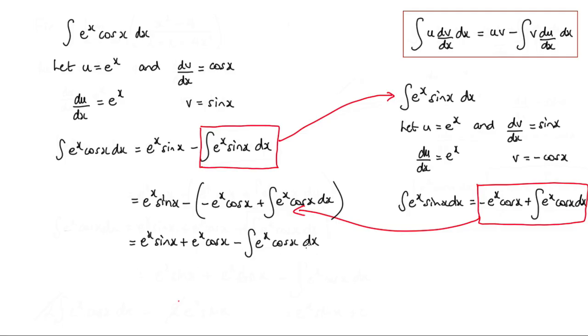Now that whole thing, we know that's equal to the integral of e to the x cos x dx. Now if you notice, we've got two of these. We've got one here and we've got one here. So if I add this to both sides, I would eliminate it from here and I'd get two of them here.